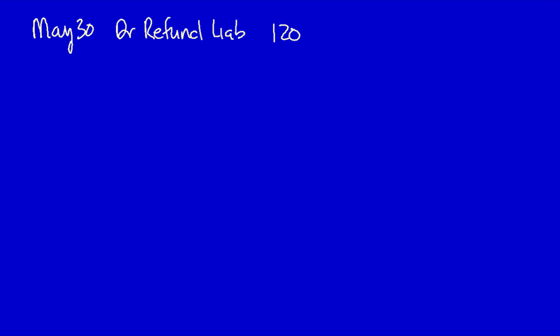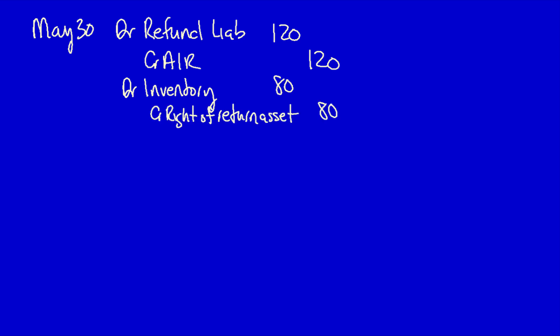Fast forward to May 30th when BJB returns one box of wood flooring. The company reduces their refund liability — they no longer owe a full refund for eight percent. The accounts receivable is also reduced because they no longer have a legal right to collect for the full amount. The refund liability is reduced by one hundred and twenty dollars. We also recognize that inventory has come back, and the right of return asset is reduced because one box has been returned.